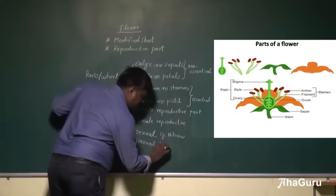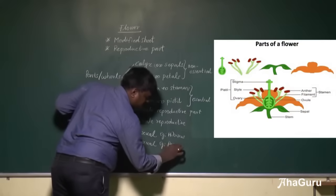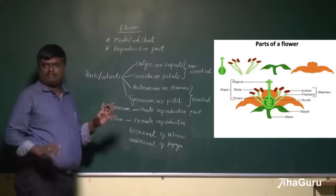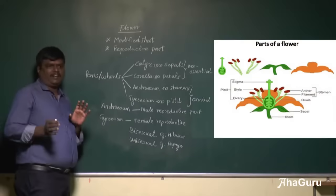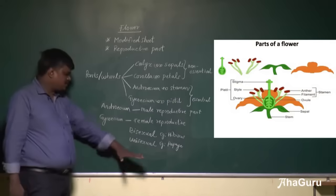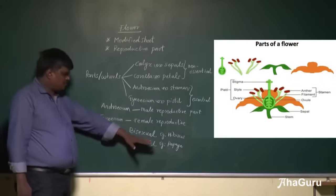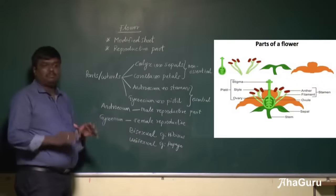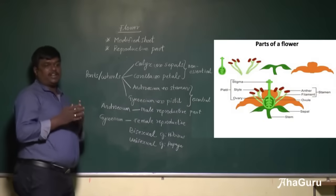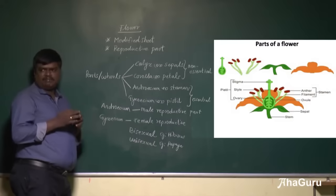Sometimes sexes can be separated — a male flower and a female flower can exist separately. Such flowers are called unisexual flowers. For example, in papaya, the male plant and female plant are separate; male flowers and female flowers are separate. Bisexual means both androecium and gynoecium are present in the same plant.